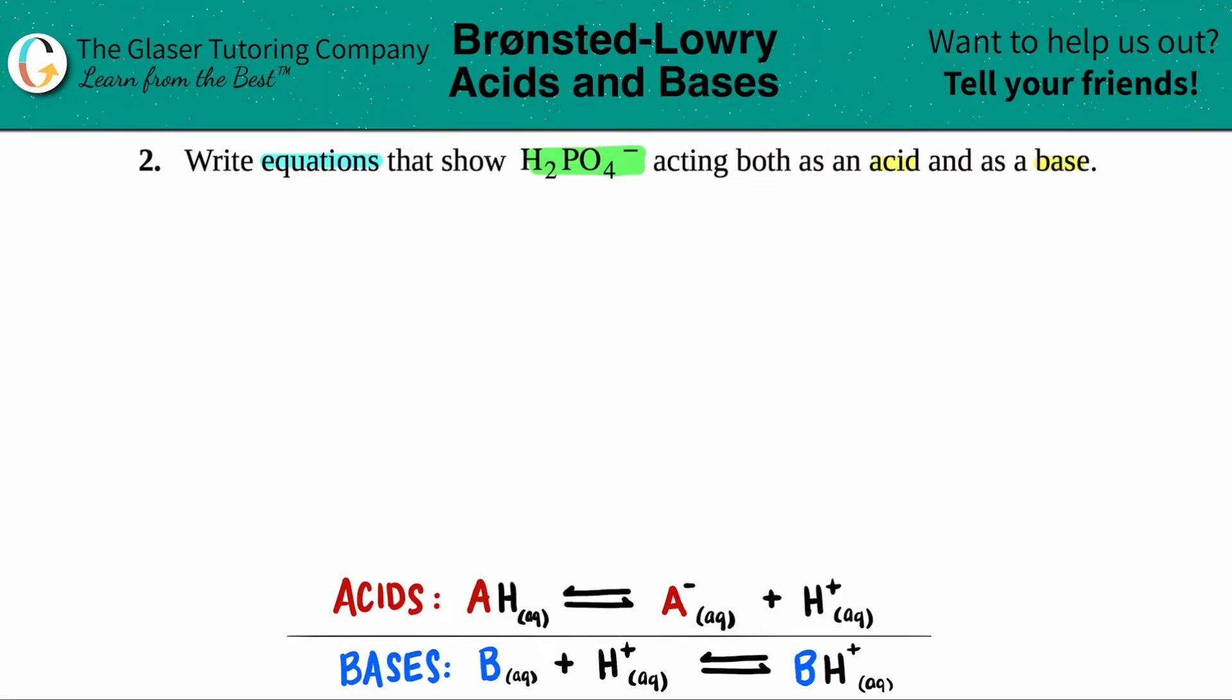The first thing you want to do is just write out what compound they gave you. In this case, it's H2PO4. So I'm going to write that down. They told me that it was a minus, which means it's a negative one charge. Since we're dealing with acids and bases, just know that any acid and any base is going to be an aqueous solution. So we have aqueous.